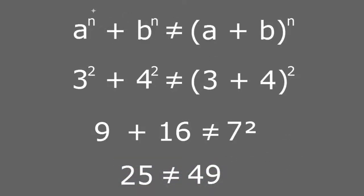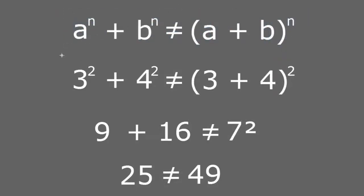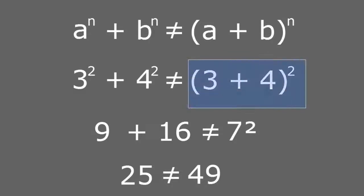On the other side, I have 3 plus 4 squared, which equals 7 squared, and that is 49. And 25 is not the same thing as 49. It's not that either expression is wrong — it's just that these two expressions are not equal to each other. If you find 3 squared plus 4 squared, you just have to square the 3, square the 4, and add them up. And if you find 3 plus 4 all squared, you have to add them first and then apply the exponent.